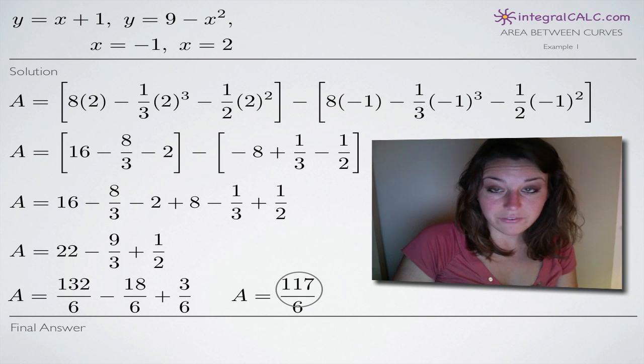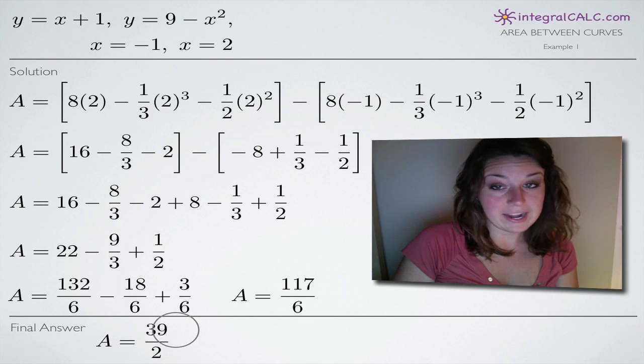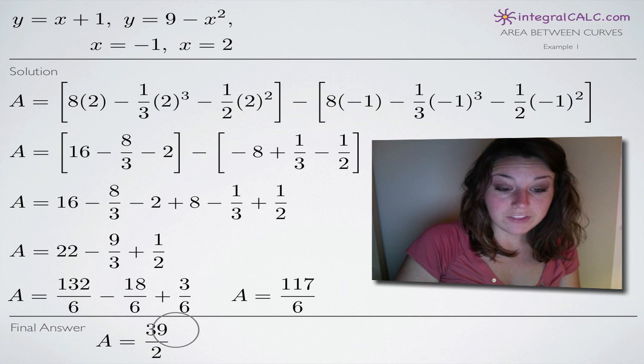We get 117 divided by 6 which if we divide both numerator and denominator by 3, we end up with 39 halves. So that's our final answer.